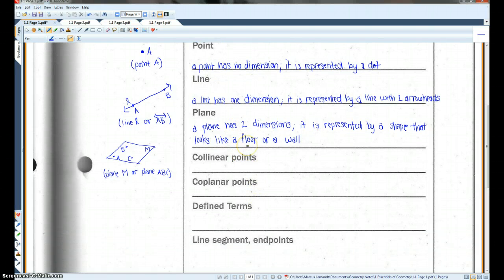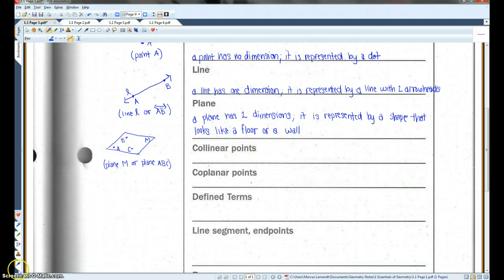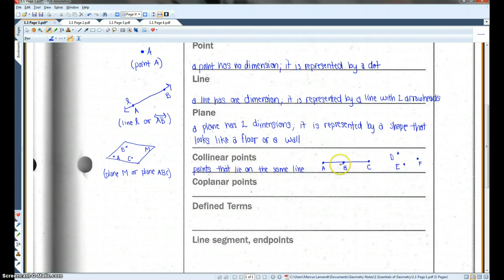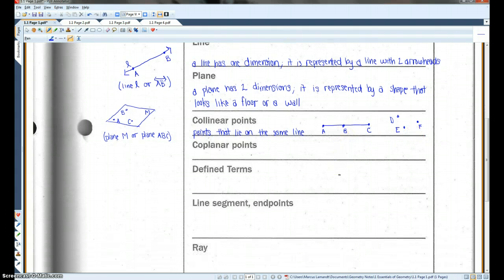All right. Collinear. Collinear points basically make a straight line. Here we go. So in this case, ABC would be collinear points. DEF are not collinear points. Okay.